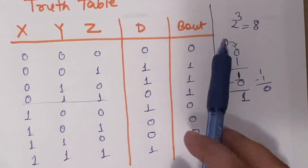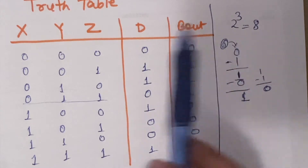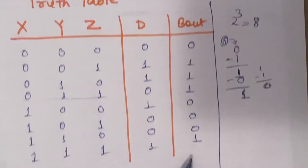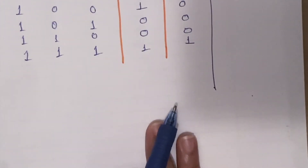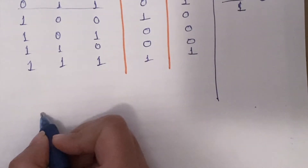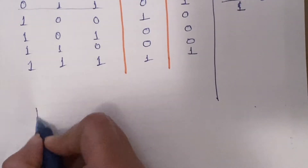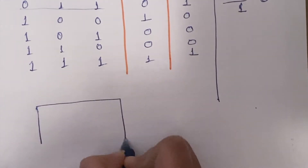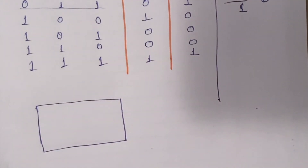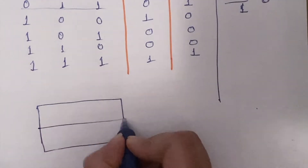Now we need to find the boolean expressions for D (difference) and B_out (borrow out) using this truth table, so we have to make a K-map. For D, since we have 8 inputs, we use an 8-block K-map.